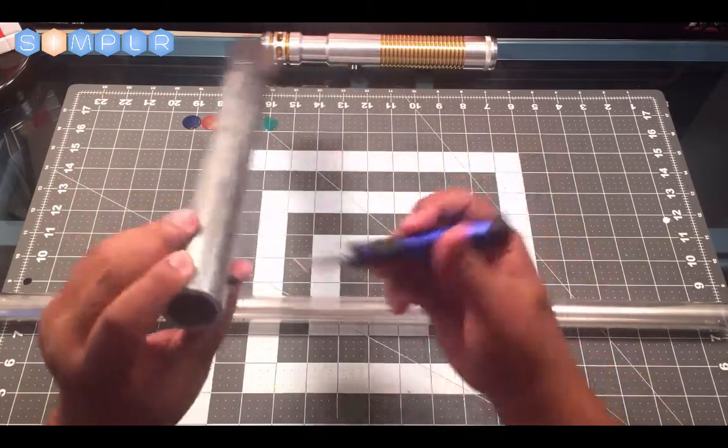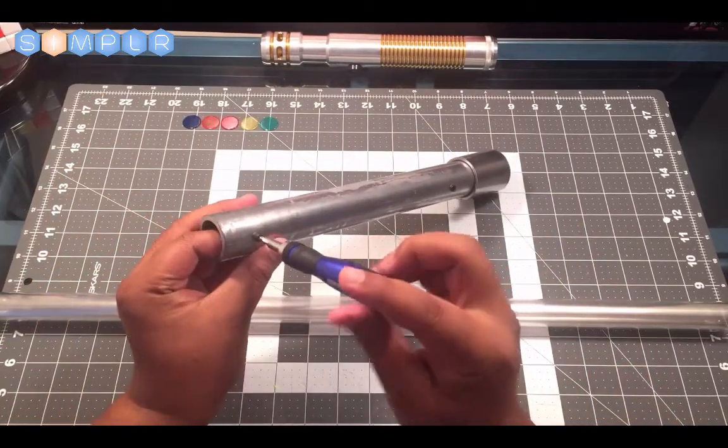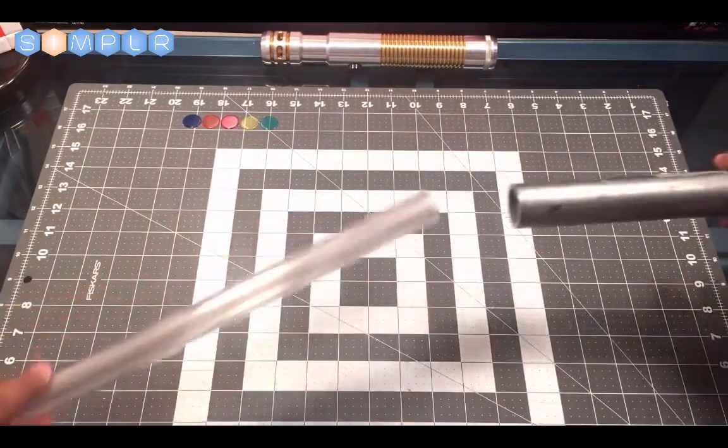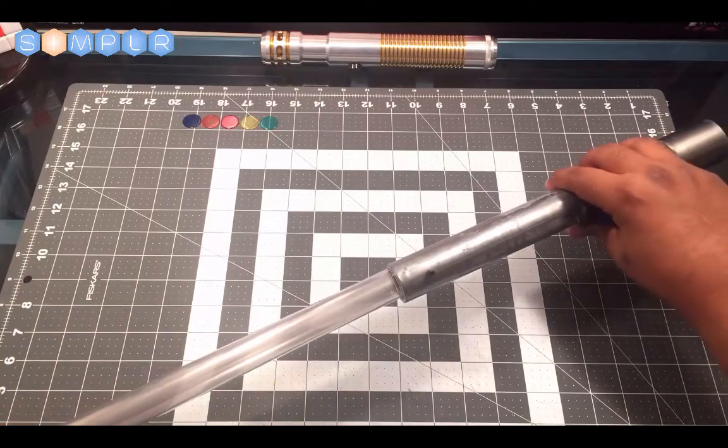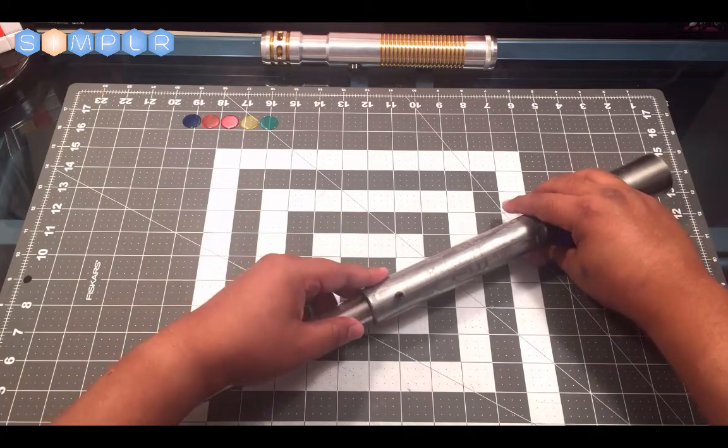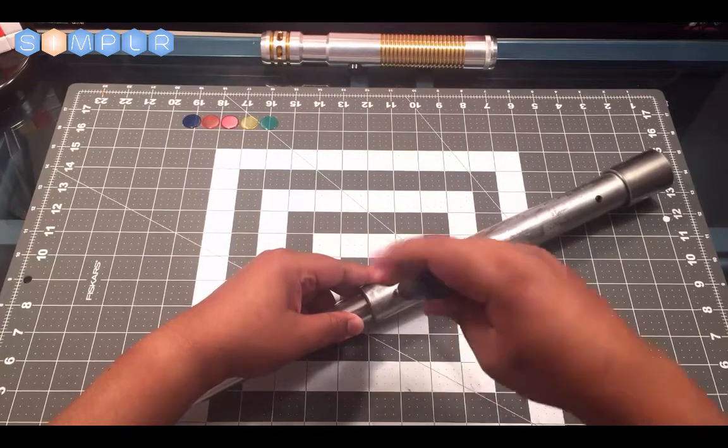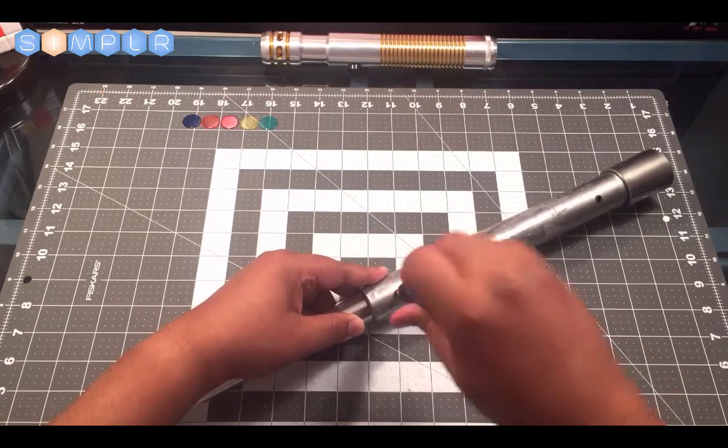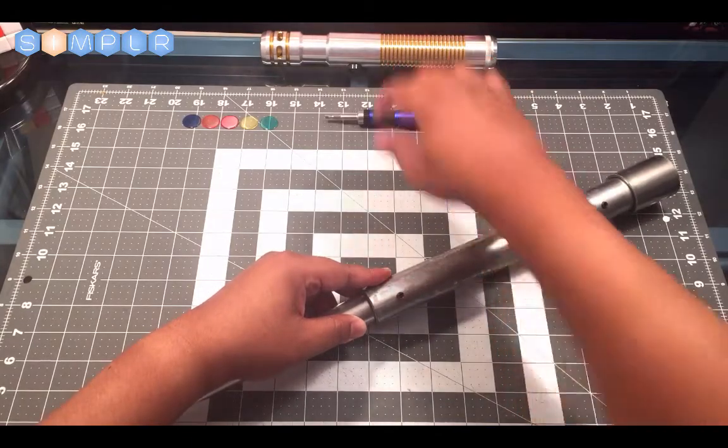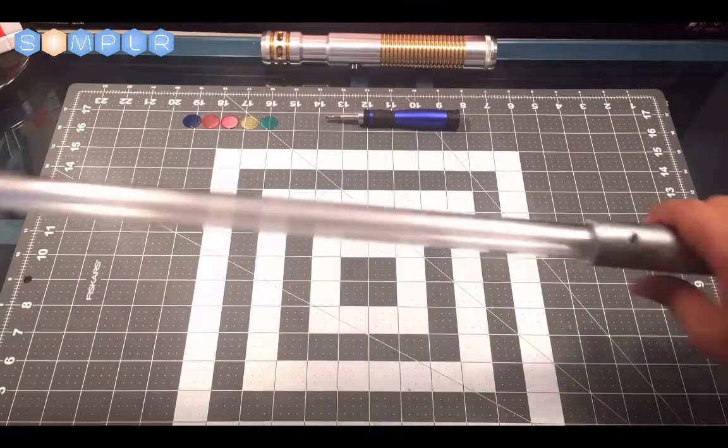So let's go ahead and attach our blade to our hilt here. Back off this set screw here a little bit, slide our blade in just right past the set screw, and then now I can screw this down and it'll connect everything. So pretty rigid there.